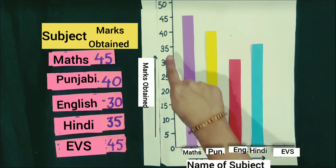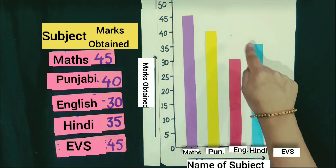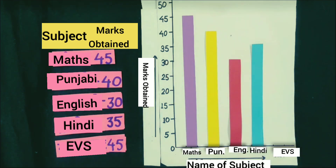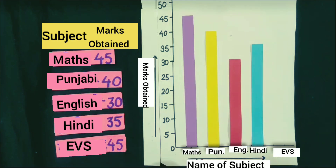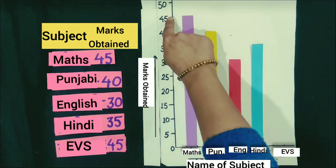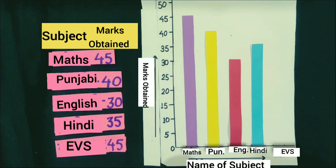Students, in EBS, he got 45 marks. So the length of the rectangular bar of EBS subject is from 0 to 45.